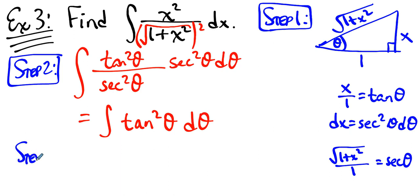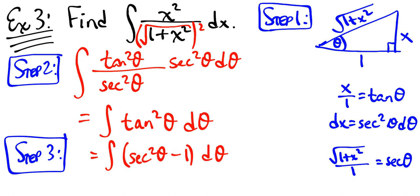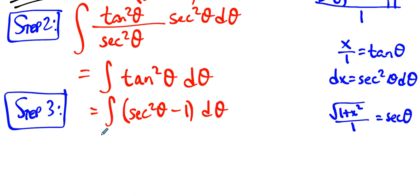Well, now it's up to us to evaluate that integral. And as we've already done in a previous video, we use a Pythagorean identity to do this. This involves flipping back in your notes one or two pages. And so this is tan theta minus theta plus a constant.